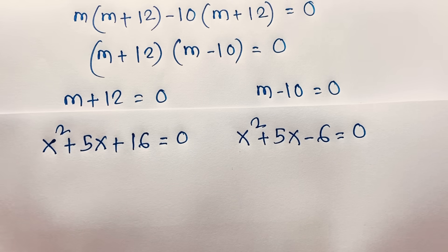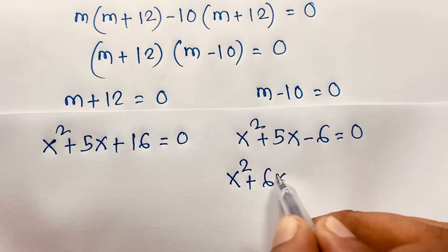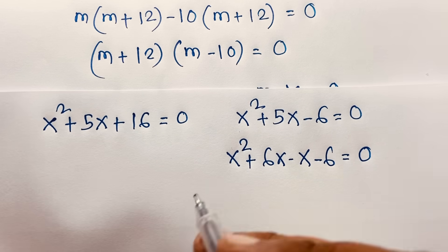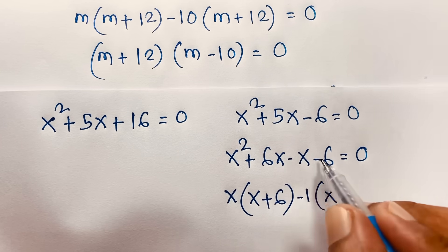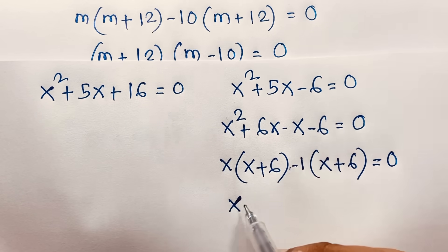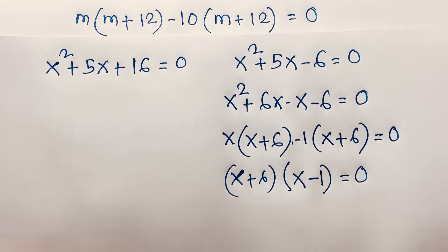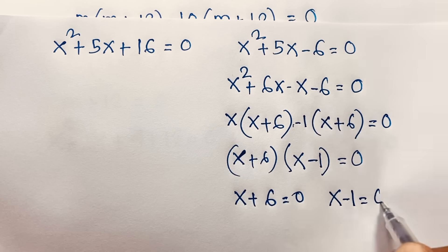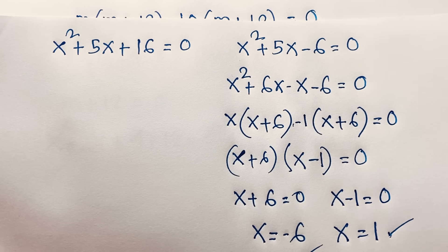For x²+5x−6 = 0, I factor by splitting: x²+6x−x−6 = 0, giving x(x+6)−1(x+6) = 0, so (x+6)(x−1) = 0. Therefore x = −6 or x = 1. These are two real solutions with no complex numbers.